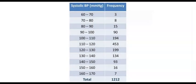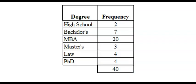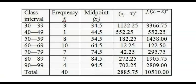Frequency distribution is simply a table that displays the frequency of various outcomes in a sample. For example, this shows the systolic blood pressure of 1,212 patients collected in a clinic, and these are the qualifications of applicants collected during a job application. When the population is too large, values are grouped into class intervals before analysis.